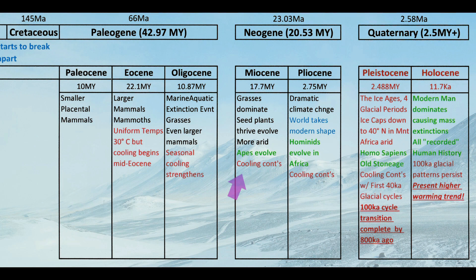The Miocene is the first epoch of the Neogene, lasting about 17.7 million years. Grasses are dominating, seed plants are thriving and evolving, areas around Africa are becoming much more arid, apes are evolving, and the cooling continues. The Pliocene is the second and last epoch of the Neogene and lasted 2.75 million years. This is a time of dramatic climate change. The world has finally taken its modern shape with the continents in their current positions, and hominids — the precursors to Homo sapiens — are starting to evolve in Africa.